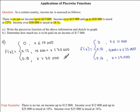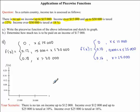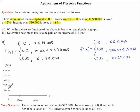Now we're asked to sketch the graph of f of x. I'm going to begin by writing out our x and f of x axes. Along our x-axis we have our income — $15,000 and $30,000 — whereas along our f of x-axis we have our tax percentage written as decimals.